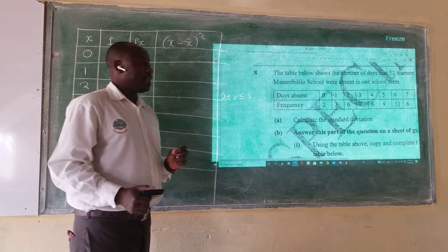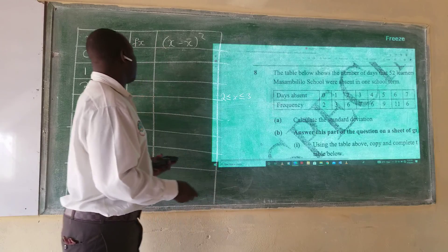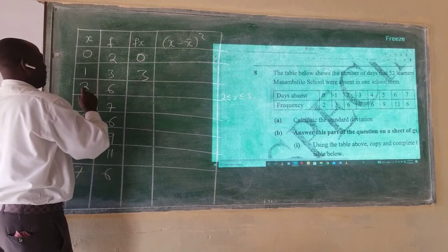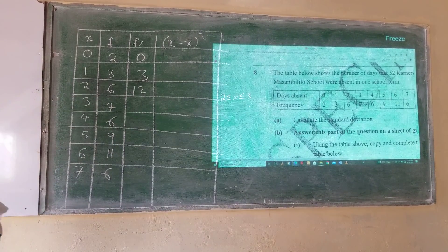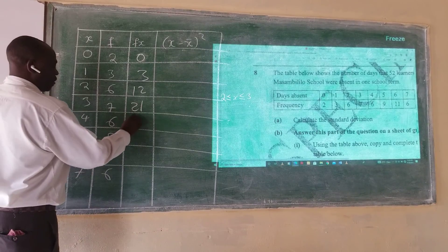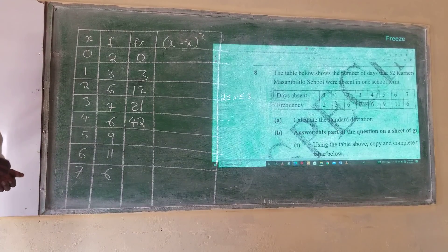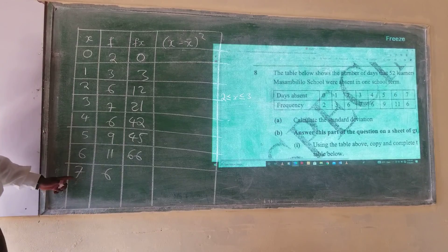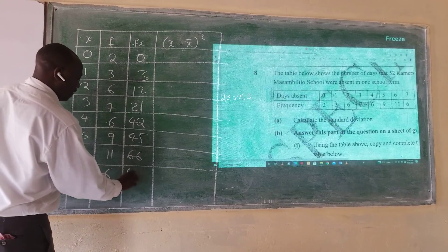The next column is fx. In mathematics, fx means you are multiplying f and x. So: 0 times 2 is 0; 1 times 3 is 3; 2 times 6 is 12; 3 times 7 is 21; 4 times 6 is 24; 5 times 9 is 45; 6 times 11 is 66; and 7 times 6 is 42.